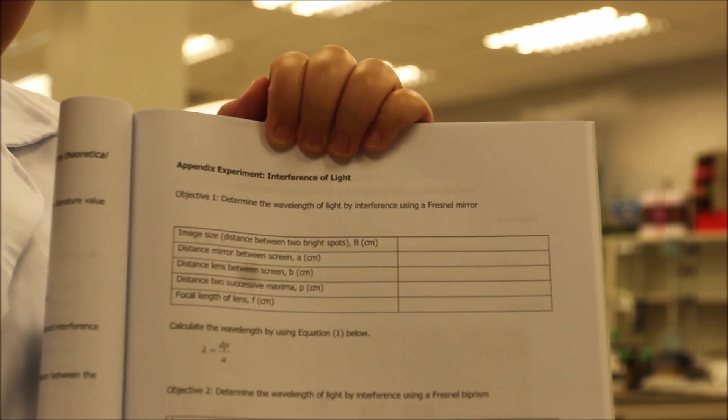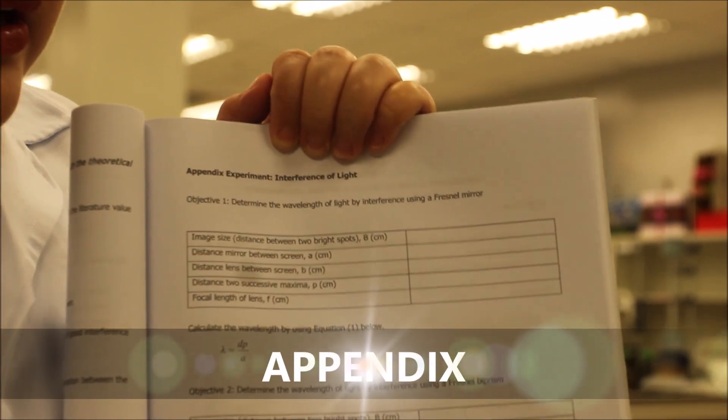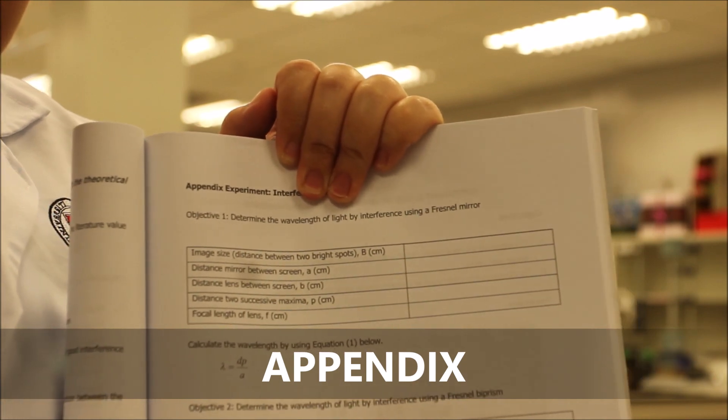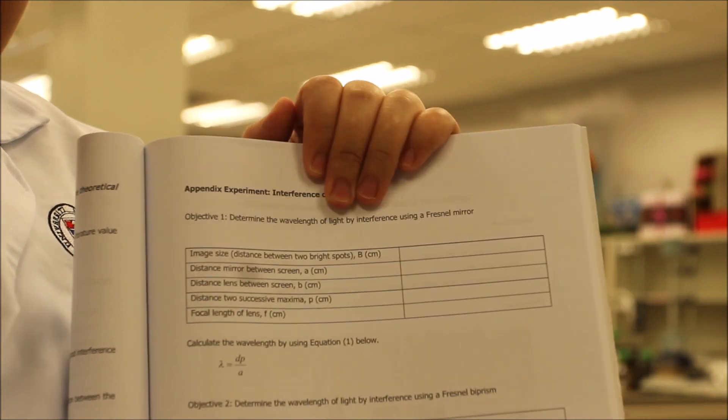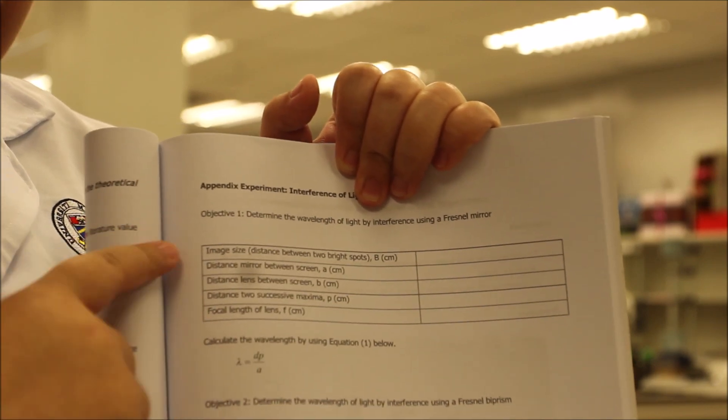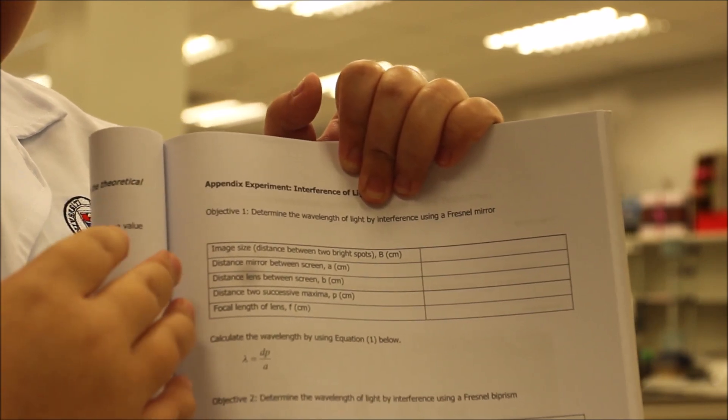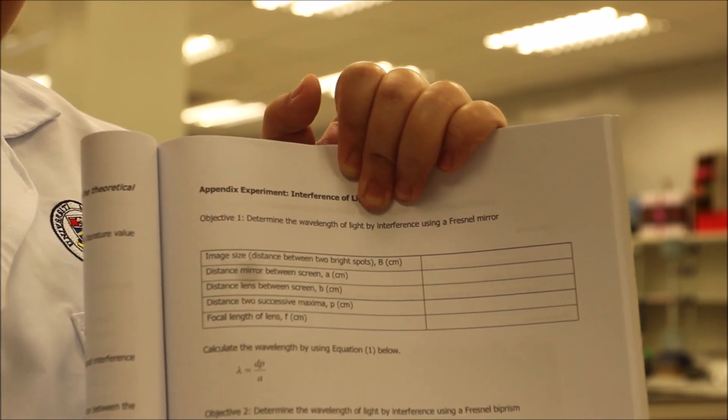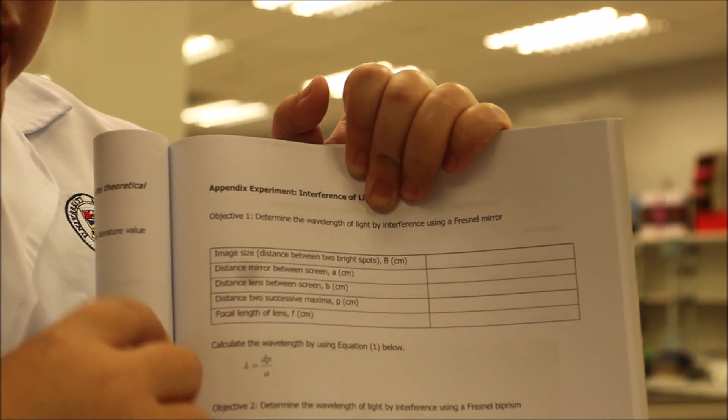Now we proceed for appendix purposes in this experiment. All of the objectives has its own appendix rules that we have to fill in. For objective 1, this is our appendix and all of the data you obtain from this experiment, you have to fill in.